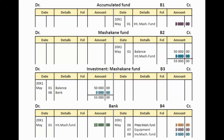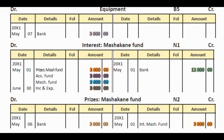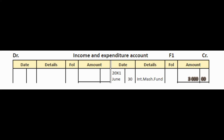The last stipulation, number four: 25% of the interest had to be used for current expenses. We transfer the last $3,000 from the interest account to the income and expenditure account — just like we normally transfer income and expenses at year end, but for clubs we call it the income and expenditure account. So we debit interest and credit the income and expenditure account with $3,000. Those two amounts are highlighted in brown.